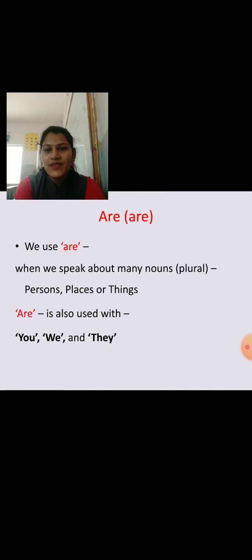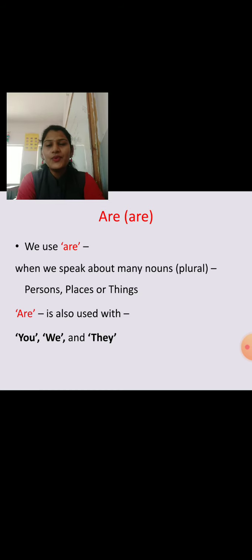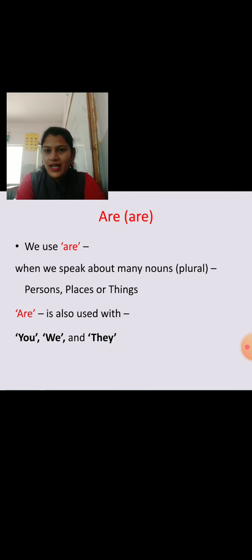Next, Are. We use Are when we speak about many nouns or more than one noun — means person, place, or things. Are is also used with you, we, and they. For example, Rita and Gita are playing cricket — they are two girls, so we say they are playing cricket. We are going to school.